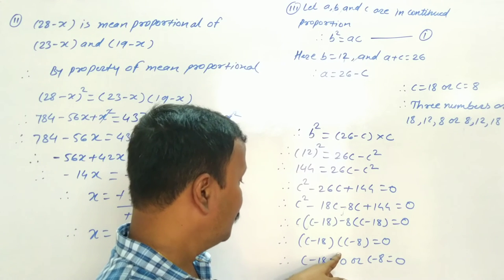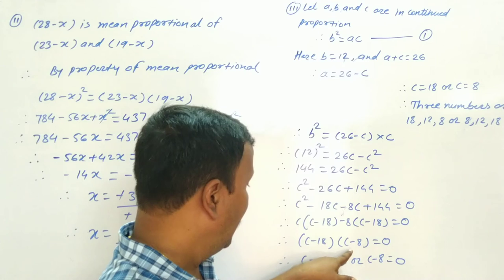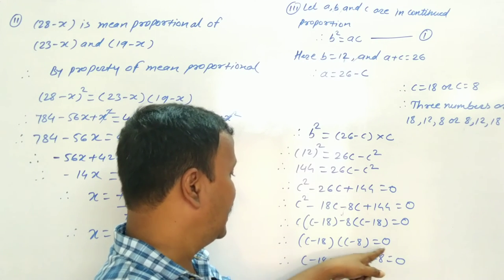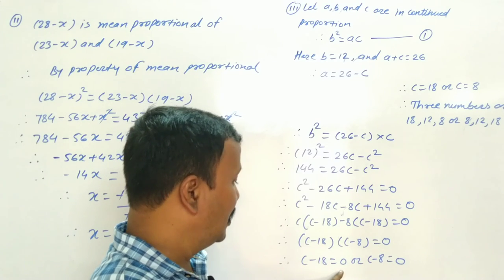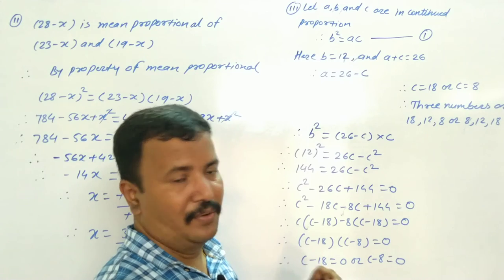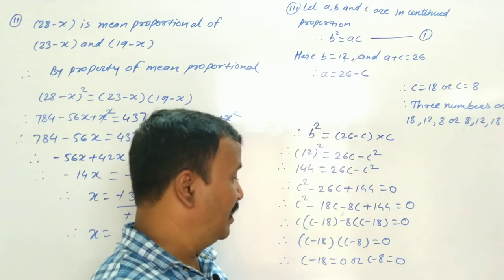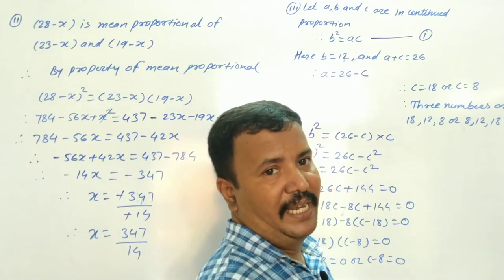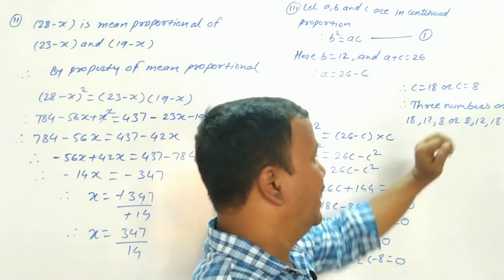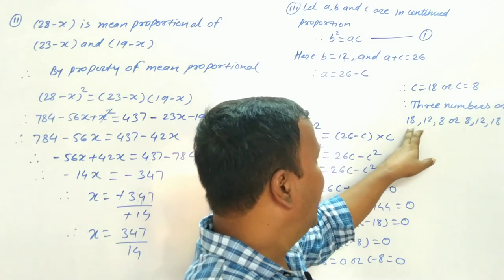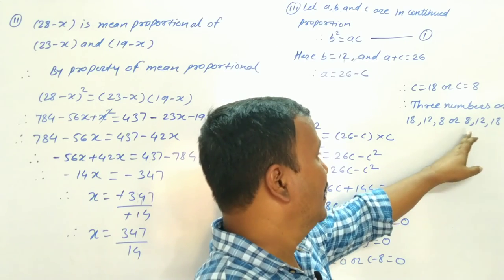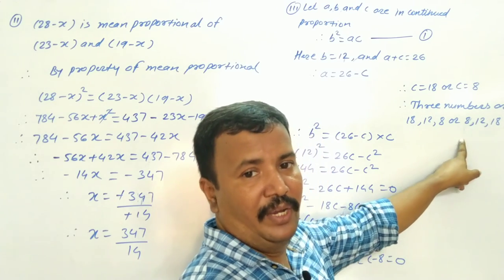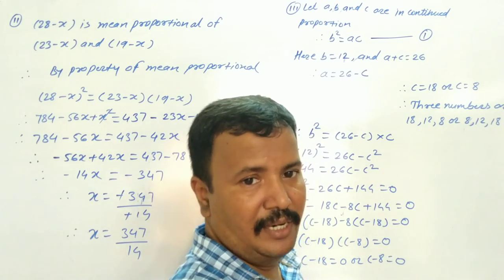Factoring: (c minus 18)(c minus 8) equals 0, so c equals 18 or c equals 8. Therefore the three numbers can be 18, 12, 8 or 8, 12, 18. Understood everyone?